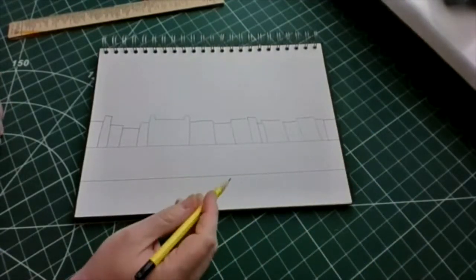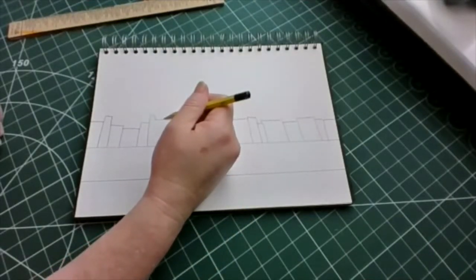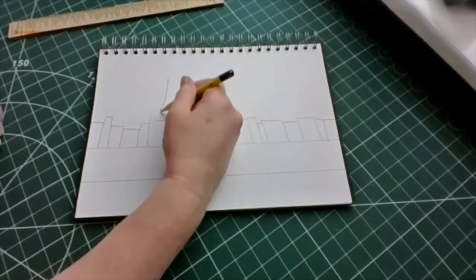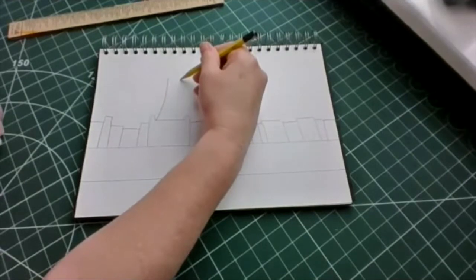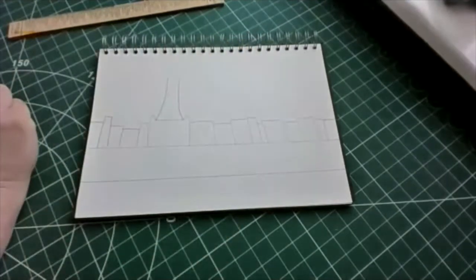Now we need to put the tower in. So we know the tower goes to a point but it doesn't go straight up. It's got a small curve on it, like that.